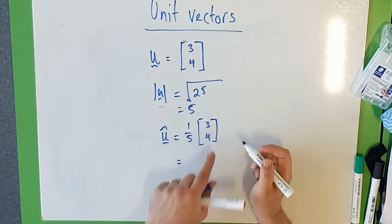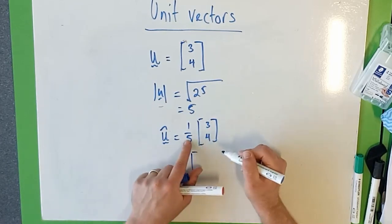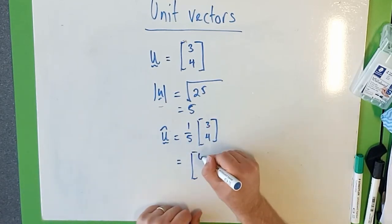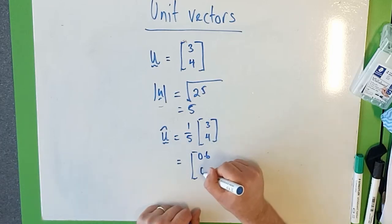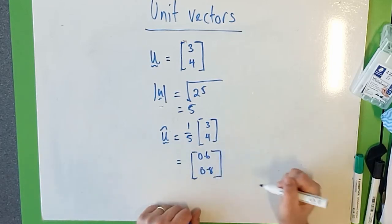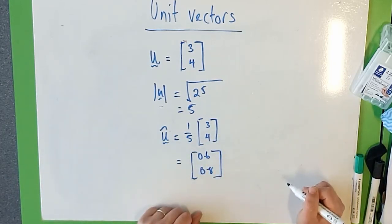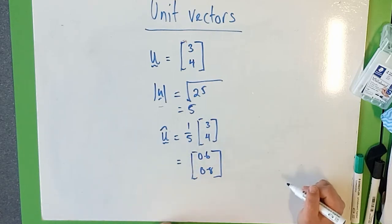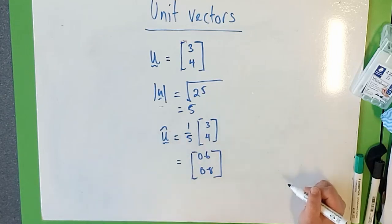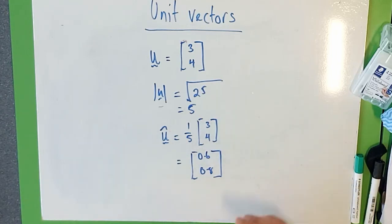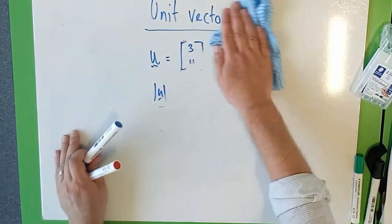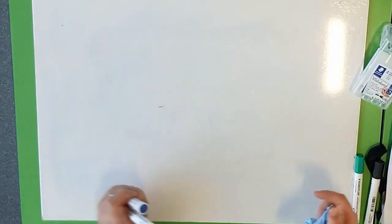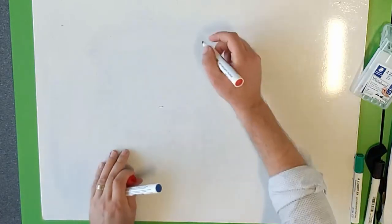If you really wanted to, you could expand these in. So you get 3 fifths, which is 0.6, and 4 fifths, 0.8, and then you have a unit vector that has a magnitude of 1 that's in the same direction as u. Done. So that's unit vectors. Why am I telling you about unit vectors? Because we can introduce another notation here.